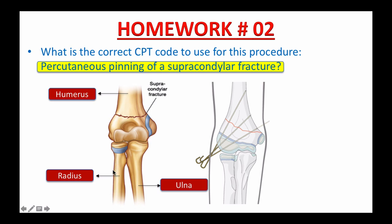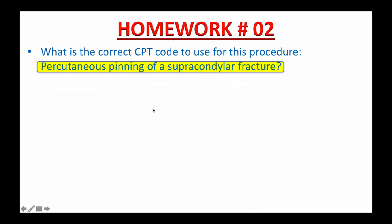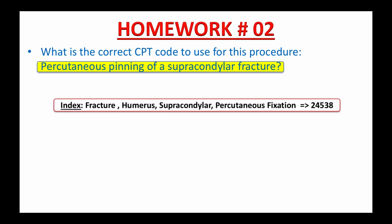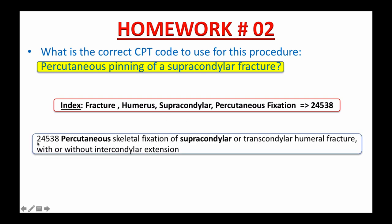The radius runs towards the thumb — remember the rat biting your thumb — and the ulna runs towards your pinky side, the little finger. That said, a supracondylar fracture is a fracture of the distal humerus bone. In the index in your CPT book, you look under the main term 'fracture, humerus, supracondylar, percutaneous fixation.' It gives you just one code: 24538. Your next step is to double-check this code in the tabular list. After reviewing, code 24538 — percutaneous skeletal fixation of supracondylar or transcondylar humerus fractures, with or without intercondylar extension — is the right code to use. The correct answer is 24538.